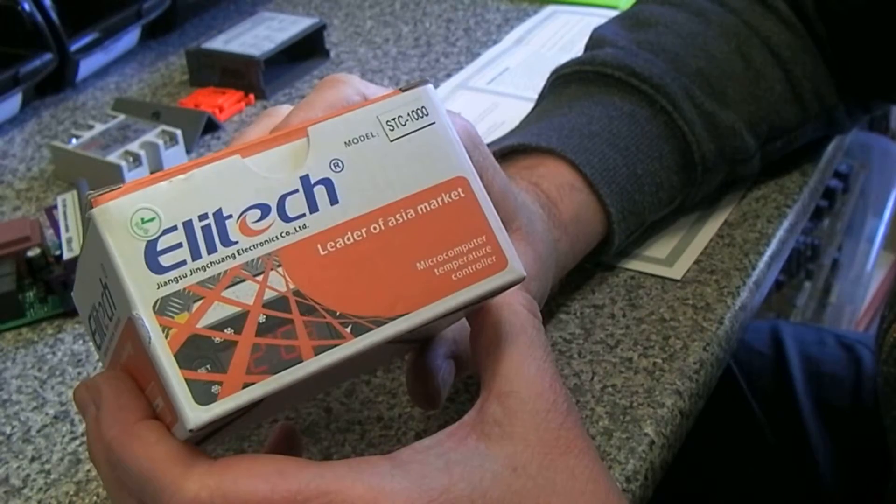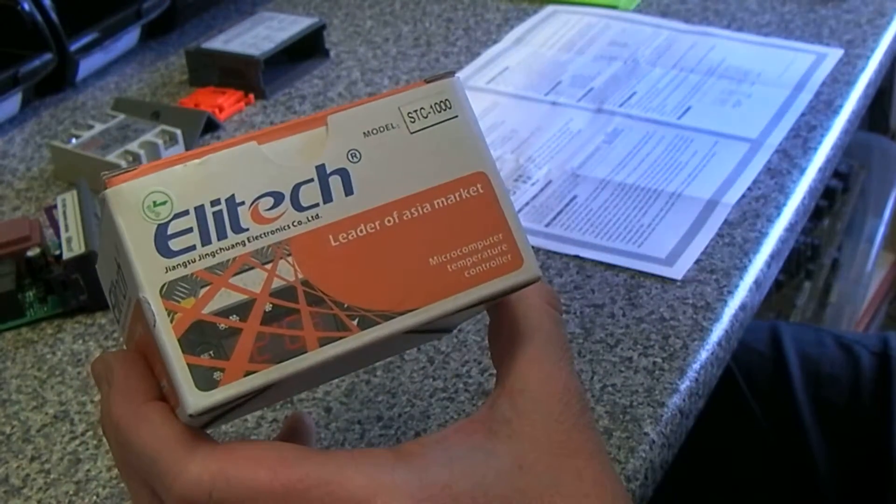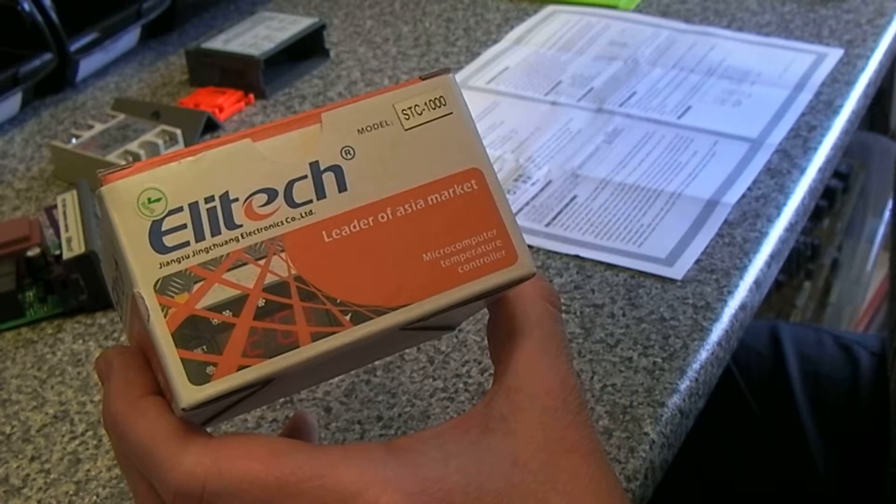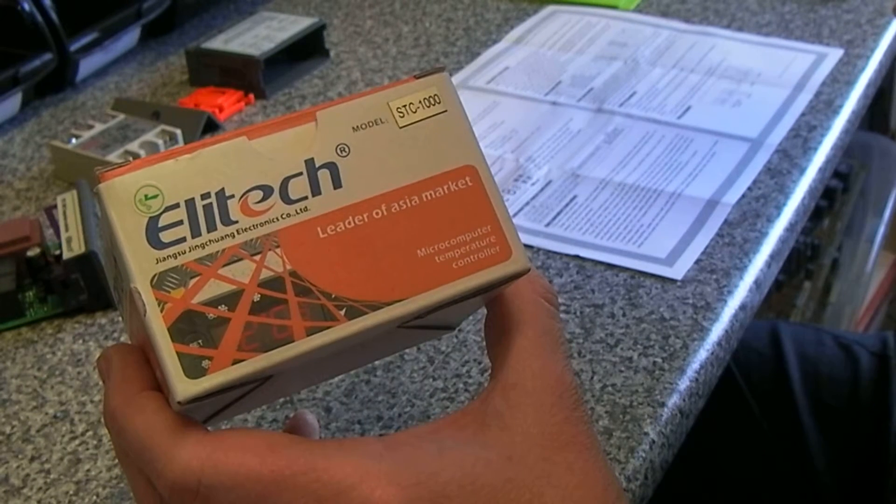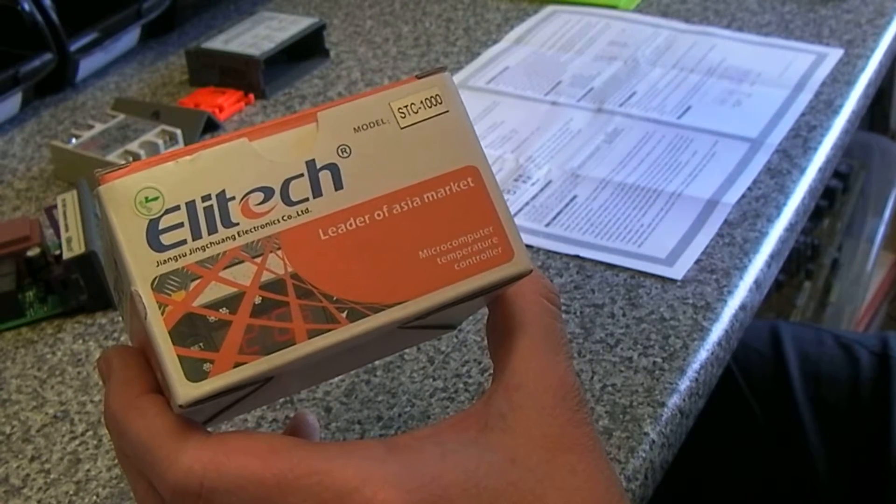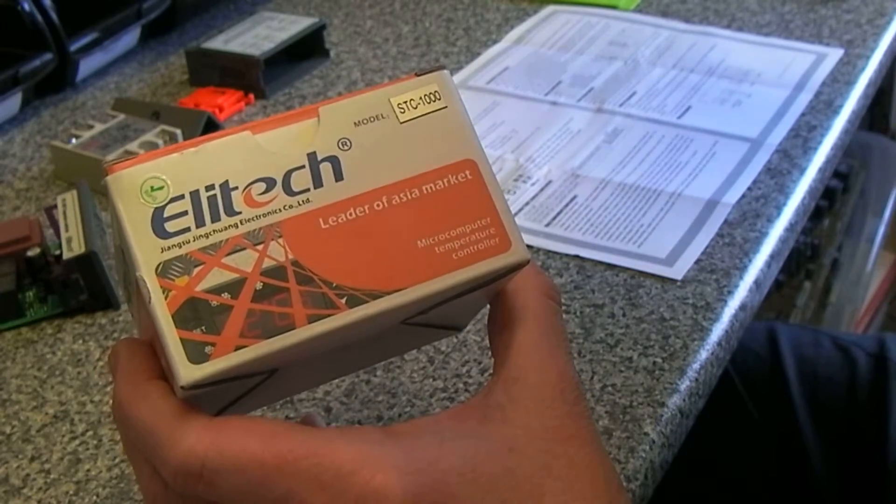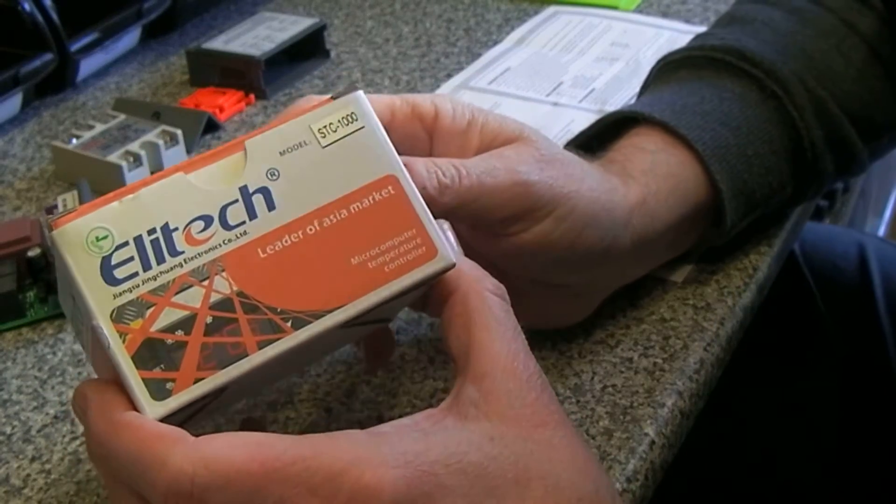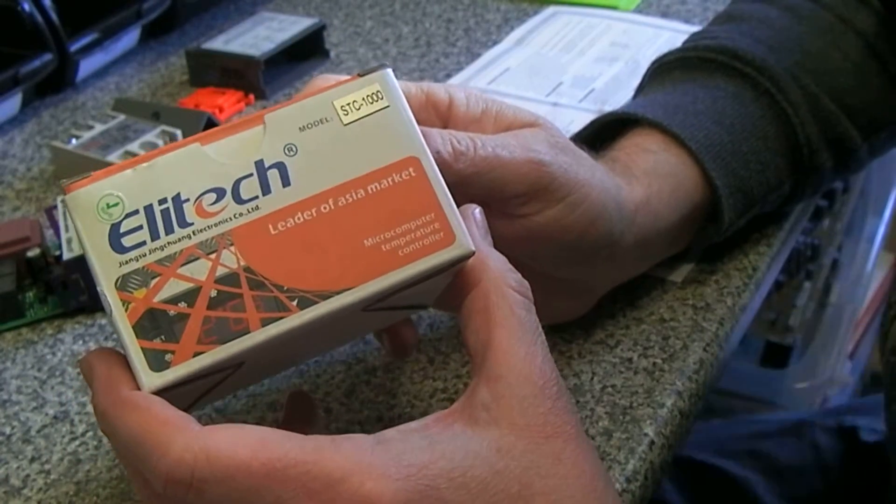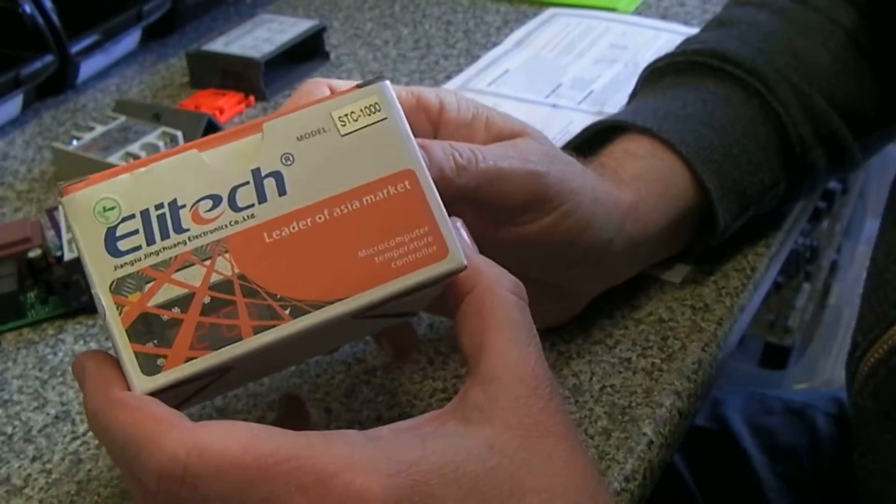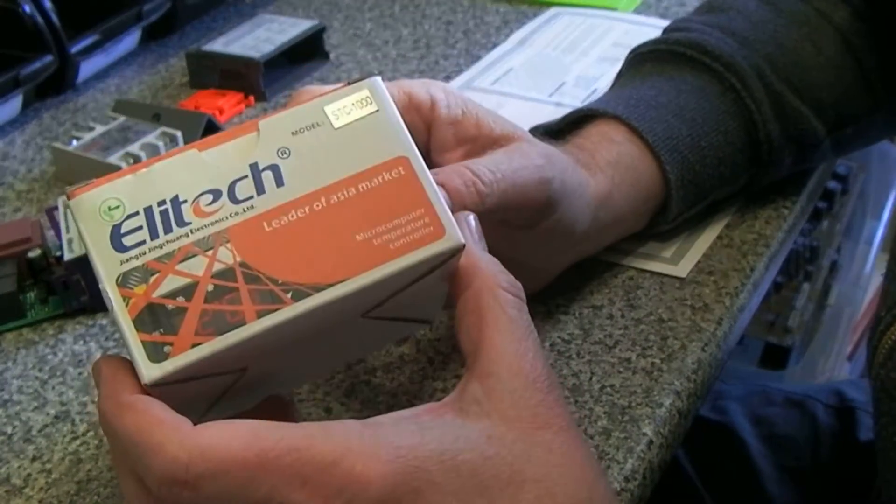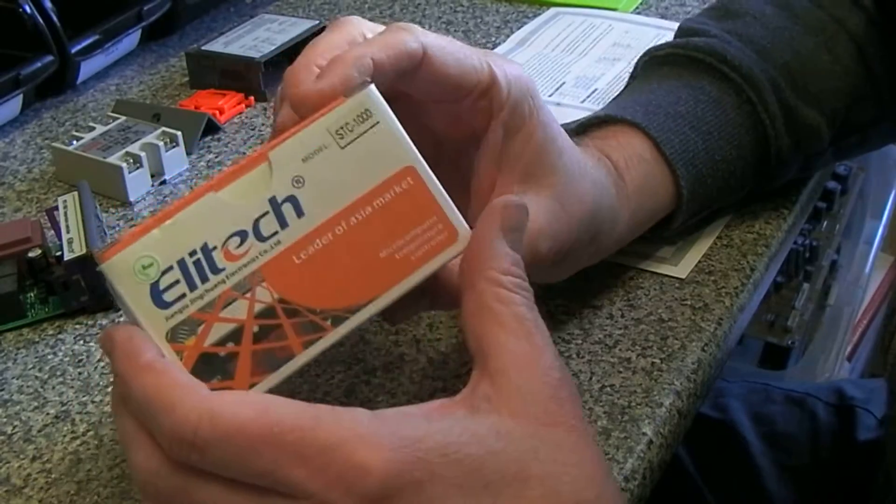I have a couple of other temperature controllers in the workshop used on my BGA rework gear. One is a REX C100 and the other is a PC410 which has far more features, but this seems to be a very basic version of the REX C100. It's really cheap, it's £15, so no issues with that at all.